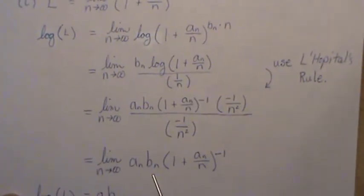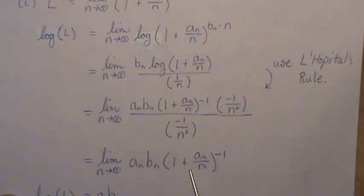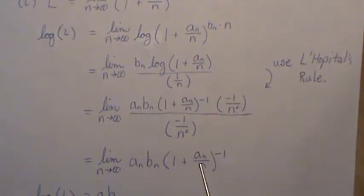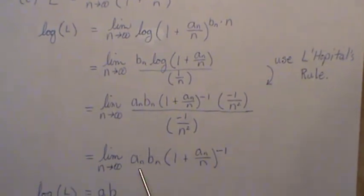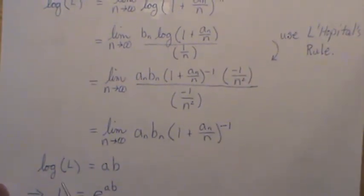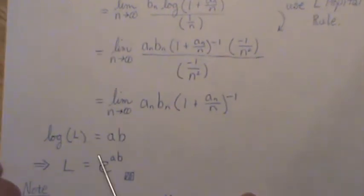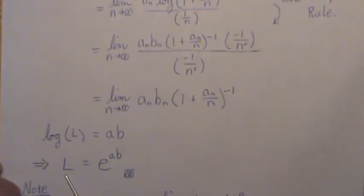Now, the limit of this product is the limit product. So we just bring it into each of those, and then since this goes to 0, this goes to 1, this goes to b, and this goes to a. So we have the log of L is equal to ab. And then if we exponentiate both sides, we get this. L is equal to e to the ab. And then we're done with the proof.